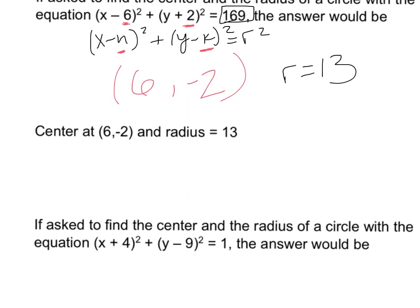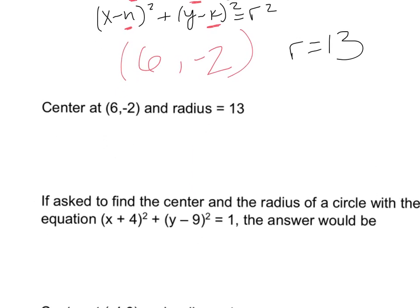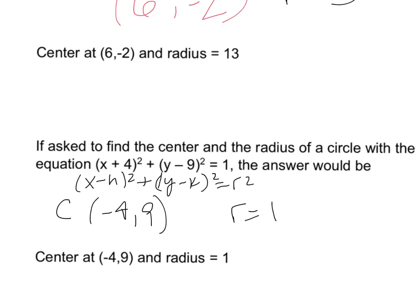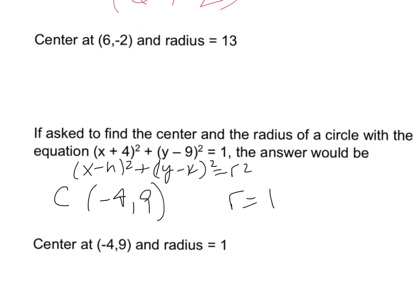For the next example, write the formula x minus h squared plus y minus k squared equals r squared. The center is the opposite of positive 4 (which is negative 4) and the opposite of negative 9 (which is positive 9). The radius is the square root of 1, which is just 1. This will be a tiny little circle centered at (−4, 9) with a radius of 1.